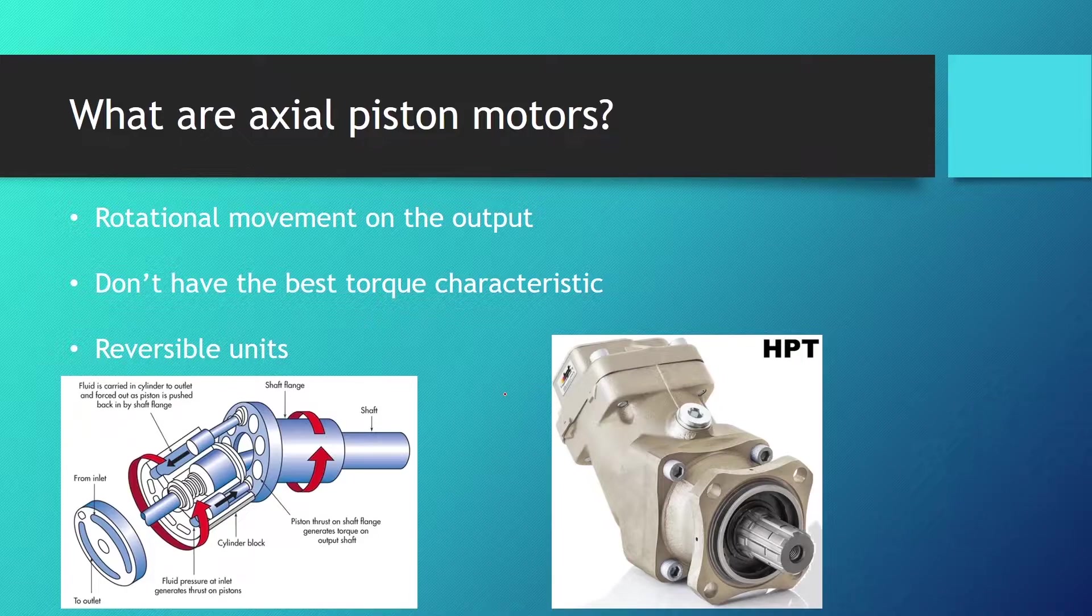With axial piston motors we have units that convert fluid flow energy into mechanical output energy. So the motors take the high pressure fluid in the inlet, the high pressure fluid moves the pistons, and we get rotation on the output.